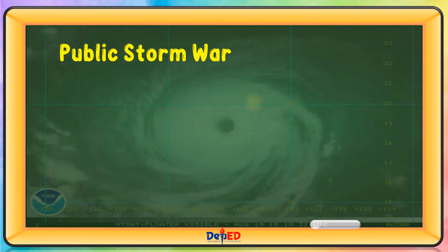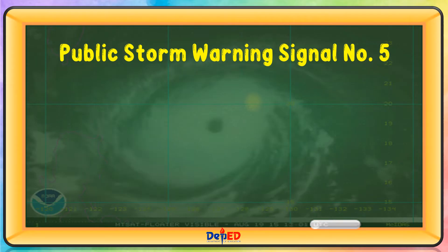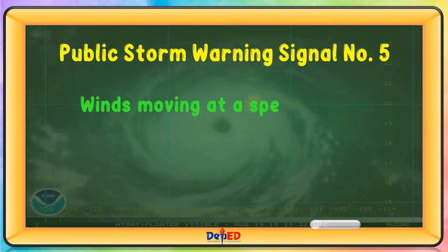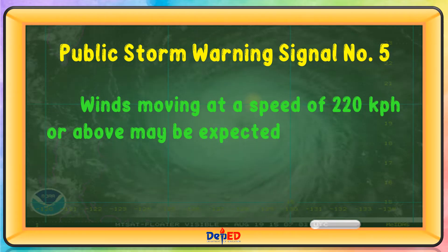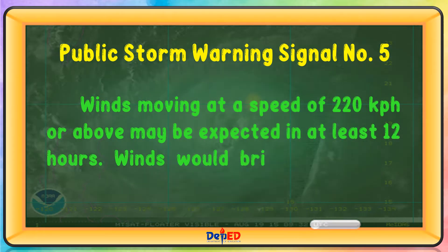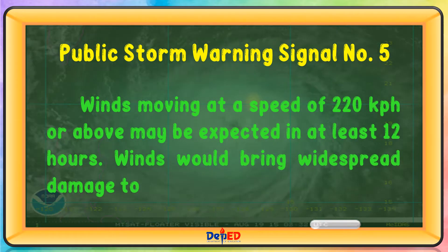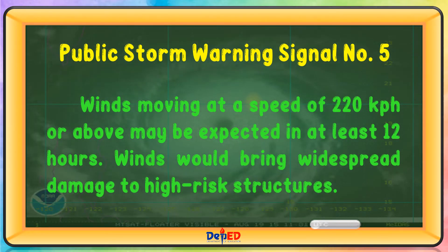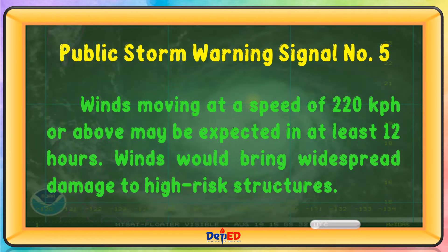Public storm warning signal number 5: winds moving at a speed of 220 km per hour or above may be expected in at least 12 hours. Winds would bring widespread damage to high-risk structures.